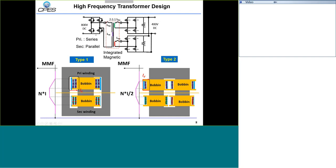The most important part of the design is the transformer. At high frequency, the transformer must have very small loss, and it must satisfy the insulation requirement for medium-voltage applications. Although the input terminal for the DC-DC converter is just 800 volt, we connect this terminal to the medium-voltage AC terminal, so we must ensure the insulation can satisfy the medium-voltage requirement. We need to select the transformer topology.